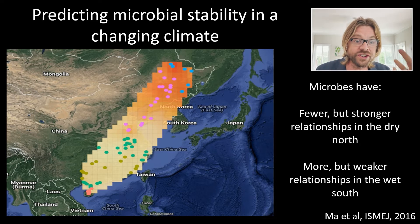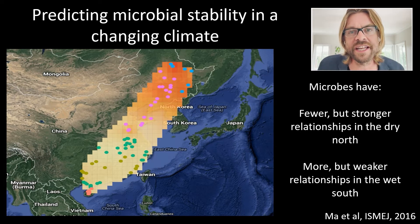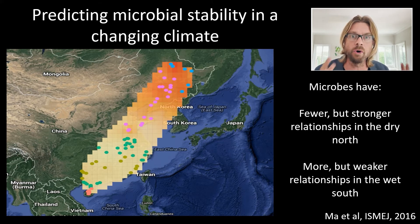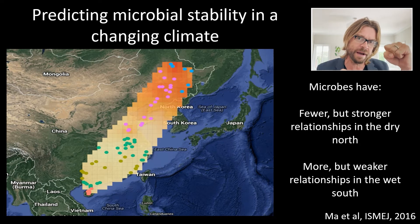We can take this information and start to predict how that system is changing. When we look at those statistical associations and correlations in network space, we see really interesting dynamics. In the north, we have fewer but stronger relationships between bacteria and fungi. In the south, we have weaker relationships — less correlative significance — but many more of them. We think this is a by-product of moisture availability. In the south, with lots of moisture, bacteria and fungi living on a soil grain can chemically communicate with microbes on another soil grain via water. But in the north, where there's no water in that gap, you're super dependent upon the metabolic relationships between you and your symbionts living in a biofilm on one soil grain.